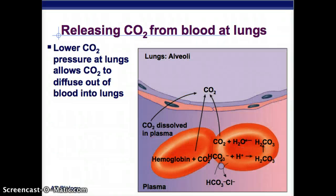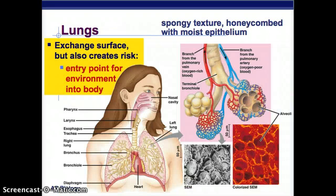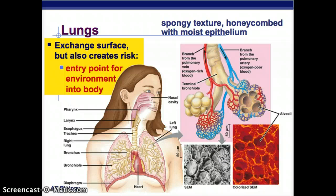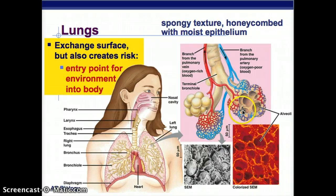In the lungs there's lower CO2 pressure, so CO2 diffuses out of blood into the lungs and we breathe it out. The lungs have a spongy texture honeycombed with moist epithelium - that's the exchange surface for oxygen and carbon dioxide. However, it creates a risk because it's an entry point for the environment into the body, so all sorts of things from the air could diffuse through and potentially cause problems in your system.